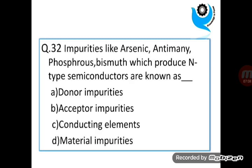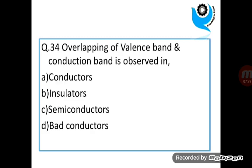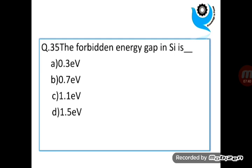Question 32. Impurities like arsenic, antimony, phosphorus, bismuth which produce N-type semiconductors are known as donor impurities. Question 33. Number of valence electrons in silicon or germanium is. Answer is 4. Question 34. Overlapping of valence band and conduction band is observed in Conductors. Question 35. Forbidden energy gap in silicon is 0.7 electron volt.